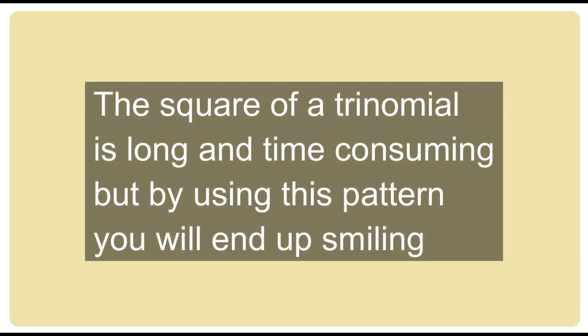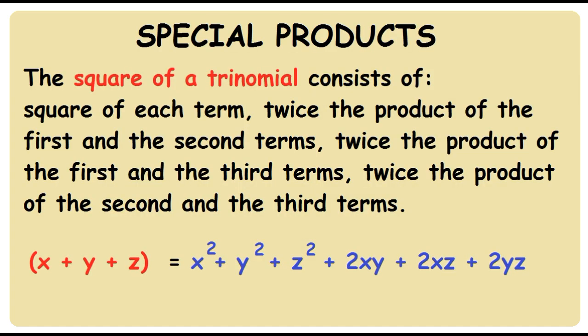The square of a trinomial is long and time consuming, but by using this pattern you will end up smiling. The square of a trinomial consists of: square of each term, twice the product of the first and the second terms, twice the product of the first and the third terms, twice the product of the second and the third terms.